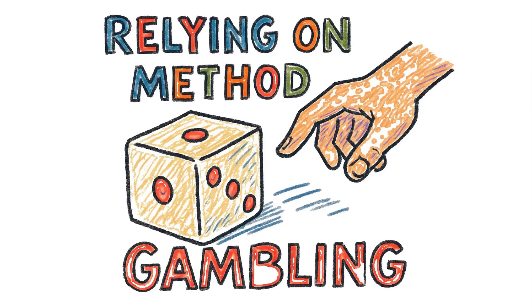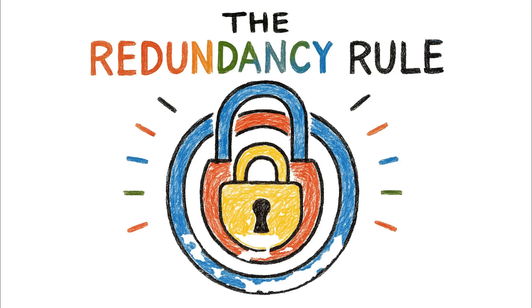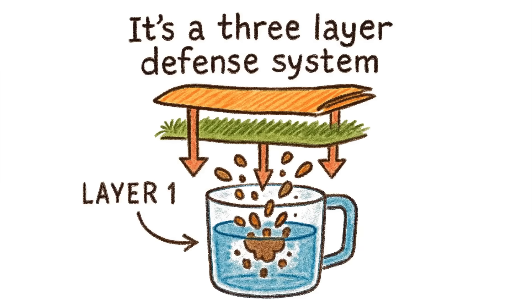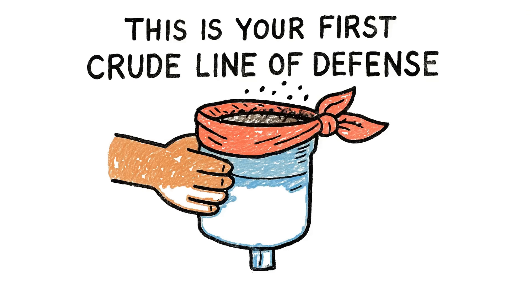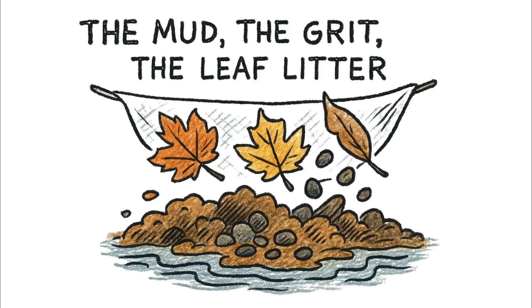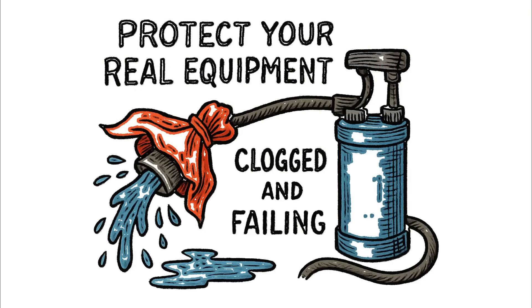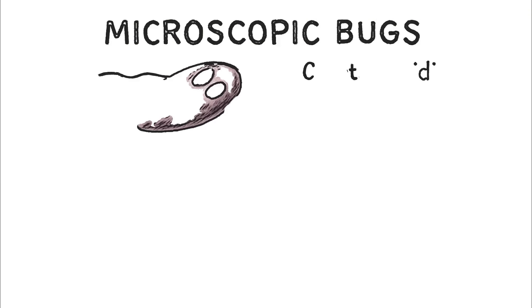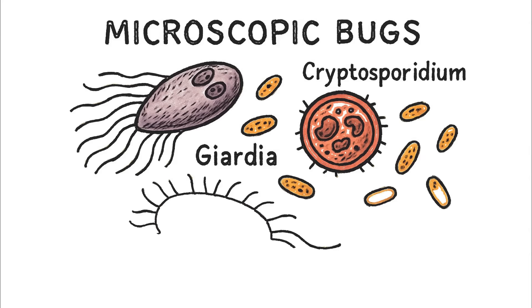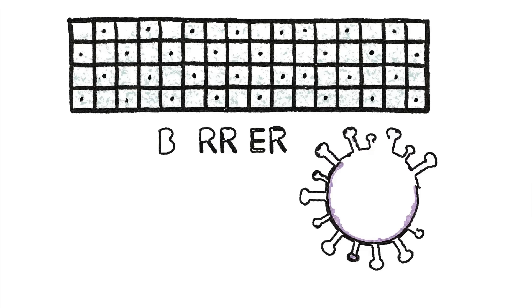Relying on one method is gambling. Survival is about stacking the odds in your favor. That's why we follow the redundancy rule — the ultimate protocol. It's a three-layer defense system. Step 1: Pre-filter. This is your first crude line of defense. Use a bandana, a t-shirt, anything to get the big stuff out — the mud, the grit, the leaf litter. You do this to protect your real equipment from getting clogged and failing when you need it most. Step 2: Micro-filter. Now you target the Giants — the microscopic bugs, the protozoa like Giardia and Cryptosporidium, and the bacteria like E. coli. A quality micro-filter is a physical barrier with pores so small that these organisms simply cannot pass through. They are stopped cold. But this barrier is useless against the smallest threats.